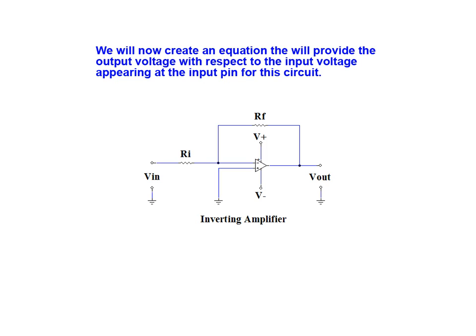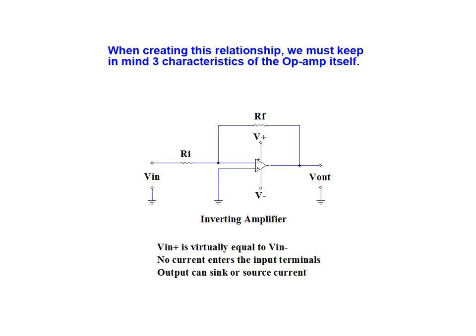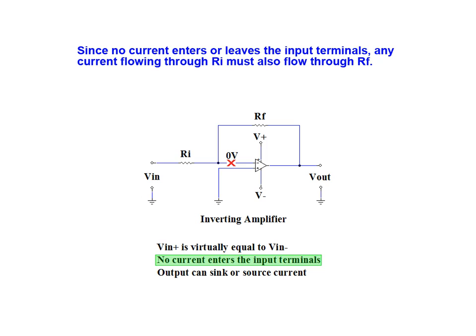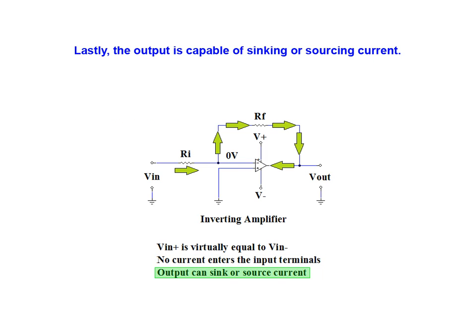We will now create an equation that will provide the output voltage with respect to the input voltage appearing at the input pin for this circuit. When creating this relationship we must keep in mind the three characteristics of the op-amp previously mentioned. Since the non-inverting terminal is connected directly to ground, the voltage at the inverting terminal will be virtually equal to zero volts. Since no current can enter or leave the input terminals, any current flowing through RI must also flow through RF. Lastly, the output is capable of sinking or sourcing current.